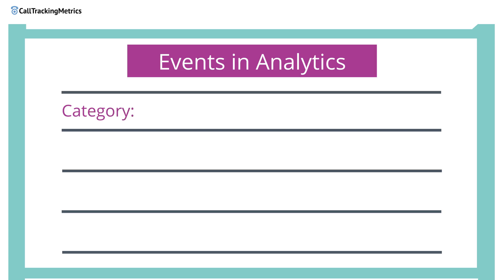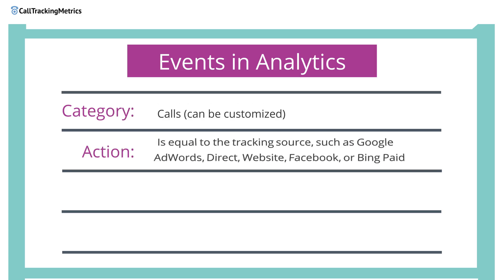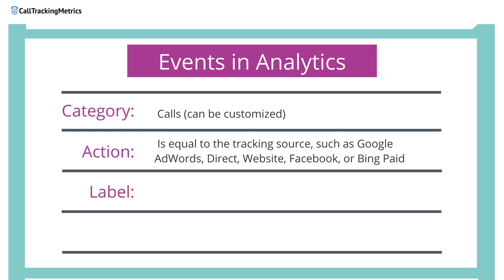An event in Google Analytics can be broken up into four main components: category, action, label, and value.